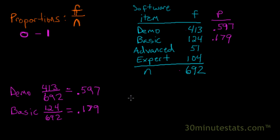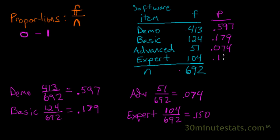We can do the same thing with the advanced, and we find that this proportion is 51 divided by 692, which is equal to 0.074. And then finally, with the expert, we calculate a proportion of sales that's 104 divided by 692, and that proportion is 0.150.